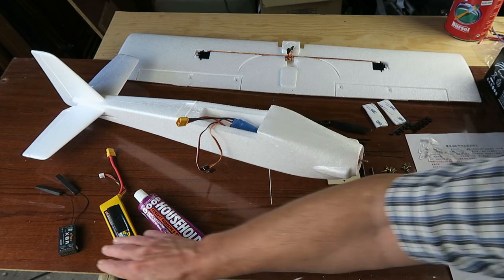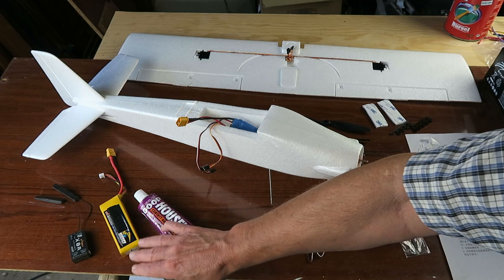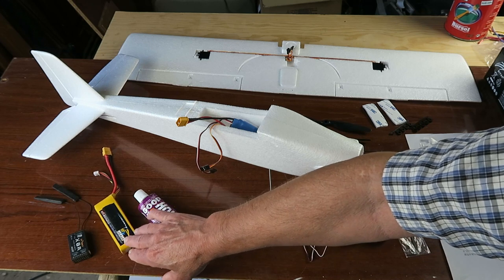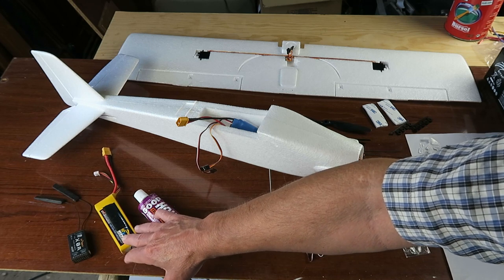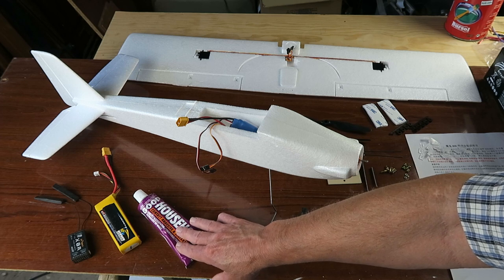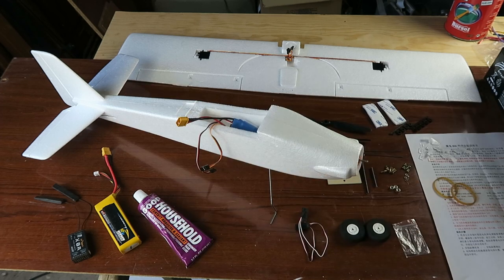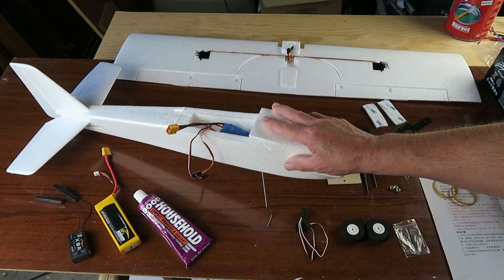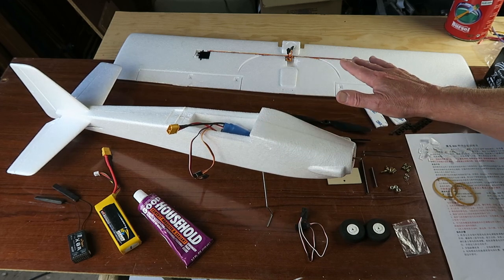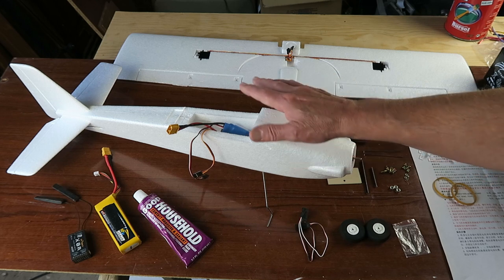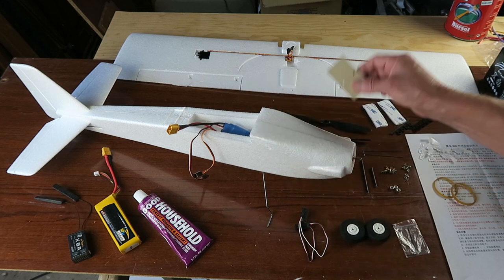In addition to the kit, all that we should need is obviously some radio gear, a suitable battery—this is a 1500 three-cell—and some EPP safe glue for the tail. That is about it. Let's go ahead now and glue those pieces into place and sort out the wing mounting.